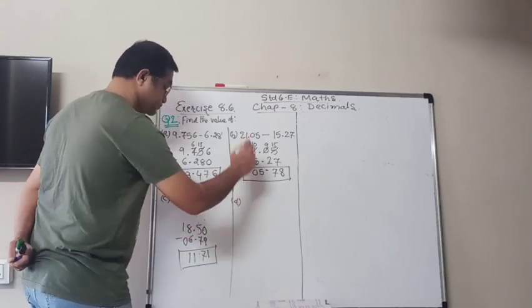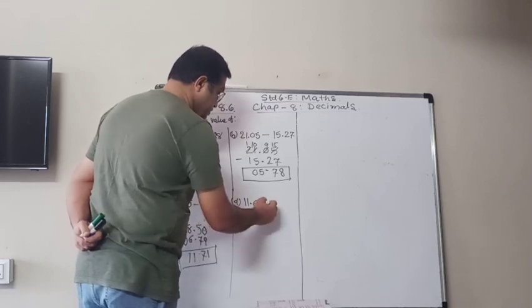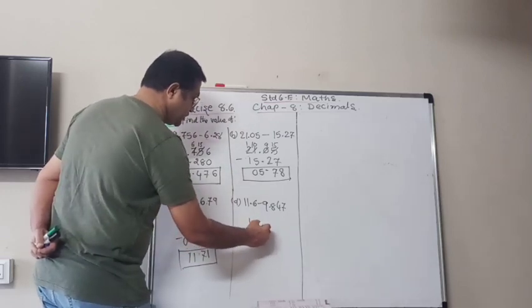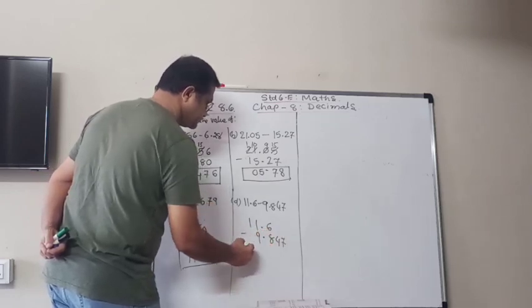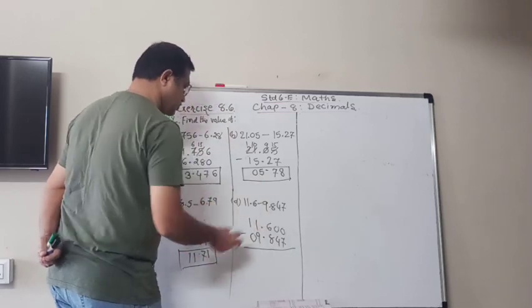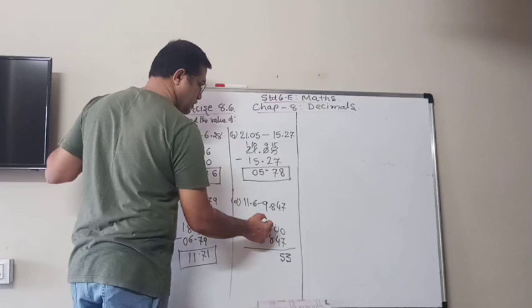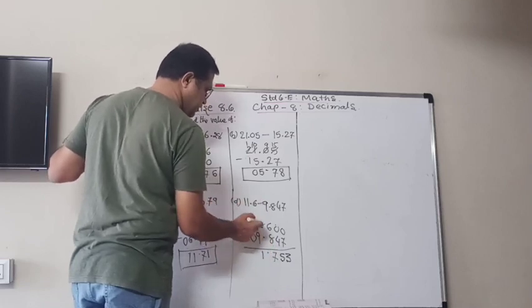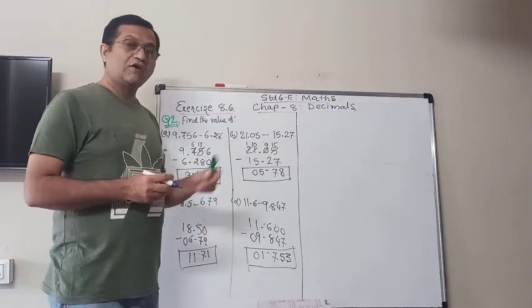And D, 11.6 minus 9.847. So here 11.6 minus 9.847. So here 00s, 10 minus 7 is 3, 9 minus 4 is 5. So 15 minus 8 is 7. So here 0, so 10 minus 9 is 1, and here 0. So if you write down 0 or if you don't write down, same thing. So answer is 1.753.